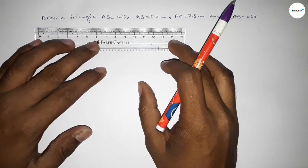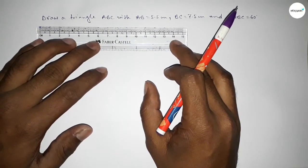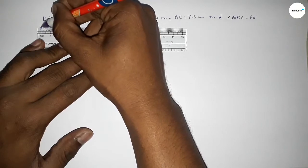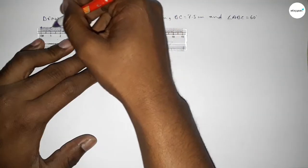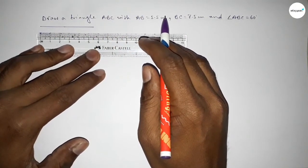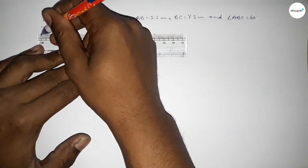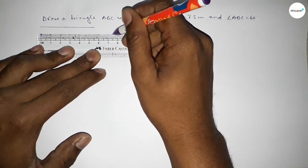First of all, drawing here the two lines 5.5 and 7.5. So first drawing 5.5, so this is 5.5 centimeters. And drawing another line of length 7.5 centimeters. So starting 0, 1, 2, 3, 4, 5, 6, 7.